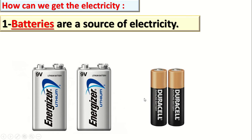Number 1: batteries. Batteries. The batteries are a source of electricity. What is the meaning of source? Source means that the battery gives us the electricity. The battery gives us the electricity, so the batteries are a source of electricity.